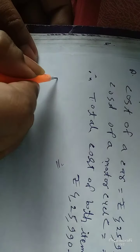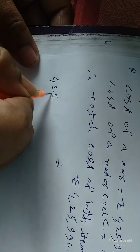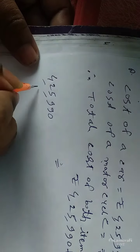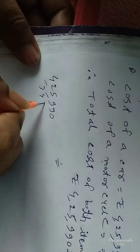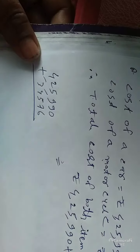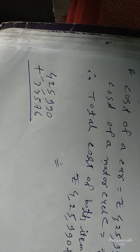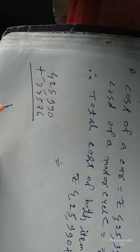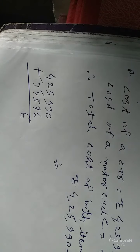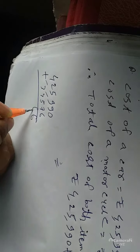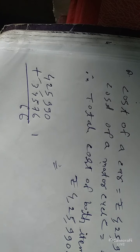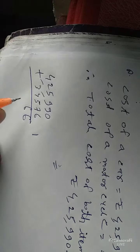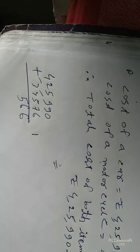Add this number: 4,25,990 plus 34,576. First add: 6 plus 0 is equal to 6. 9 plus 7 is equal to 16, carry 1. 9 plus 5 is equal to 14, plus 1 is equal to 15, carry 1. 5 plus 4 is equal to 9, plus 1 is equal to 10, carry 1.